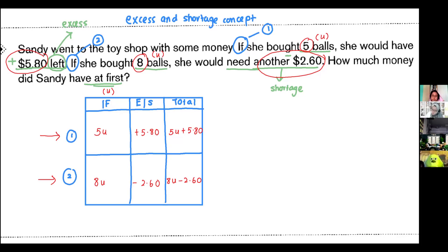Since these two, they are talking about the same amount of money. She brought some money to the toy shop. And these two totals are talking about the same amount of money. It's a matter of whether she wants to buy five balls or whether she wants to buy eight balls. She haven't buy it yet. If the word is if, if she buys five balls, she needs $5.80 left. If she buys eight balls, she needs another $2.60, which means these two totals are referring to the same amount of total money.